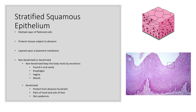Keratinized types protect the skin from abrasion and are very strong and sturdy because keratin is a very rigid and sturdy protein. You can find this in the palm of the hand and sole of your foot, as well as the skin epidermis, which is the most superficial layer of skin.